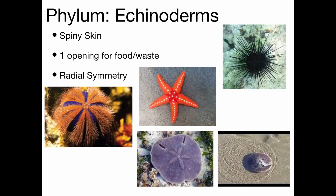Starfish have a strong ability to regenerate. In the middle portion is an area called the central disk. If you cut off an arm that still has part of the central disk, it can grow back into a whole new starfish. Fishermen who chopped up starfish and threw them back, thinking they were getting rid of them, were actually encouraging asexual reproduction. Starfish move around using small structures on the bottom called tube feet.